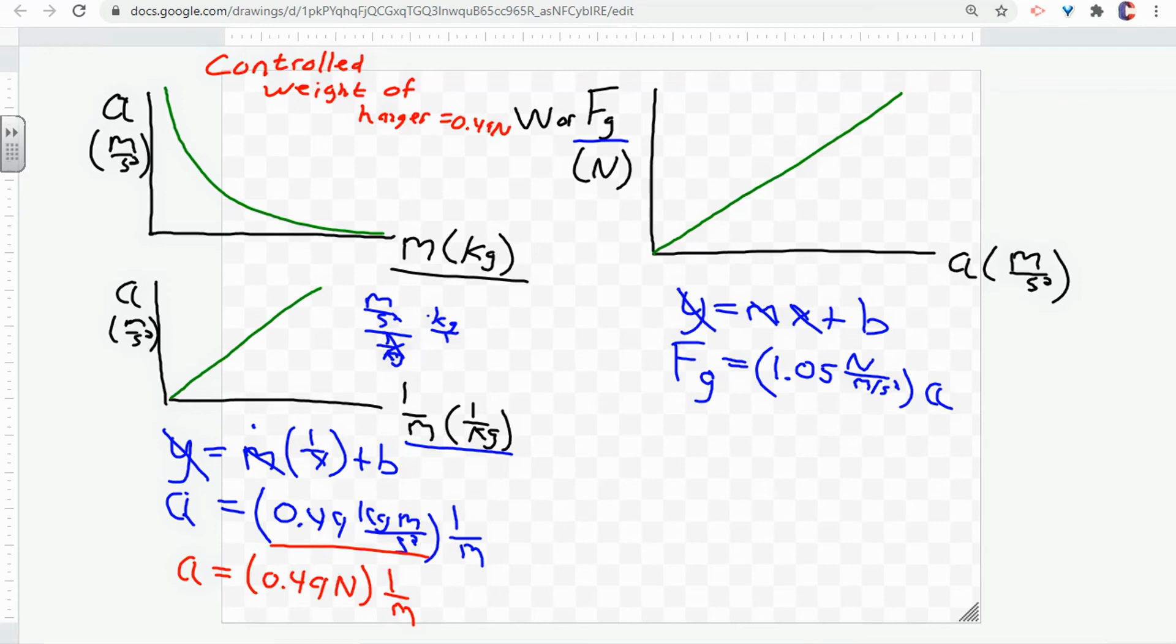So our slope here is the weight of the hanger. The weight of the hanger was the net force on our system. So what that means is that for this, the acceleration is equal to the net force times 1 over mass.